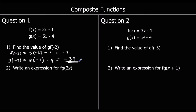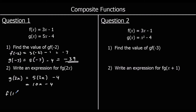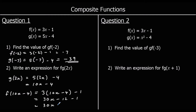Question 2: write an expression for fg of 2x — putting 2x into g and then that into f. g of 2x is 5 times 2x minus 4, which is 10x minus 4. Now put that into f: f of (10x minus 4) is 3 times (10x minus 4) minus 1. That's 30x minus 12 minus 1, which is 30x minus 13.